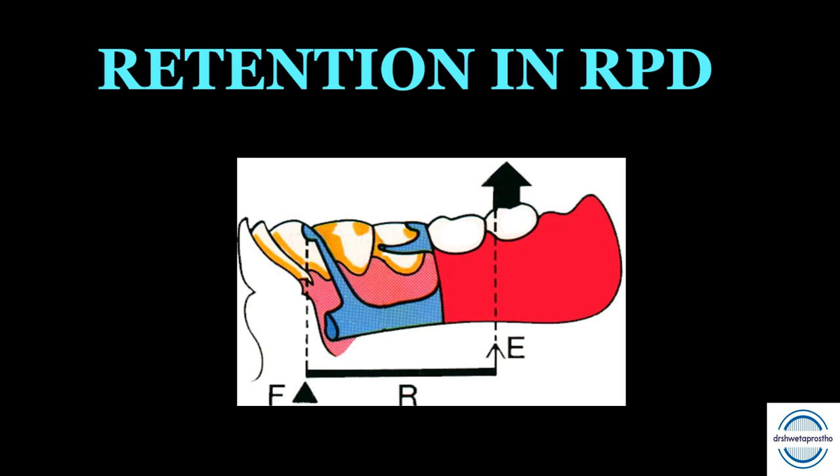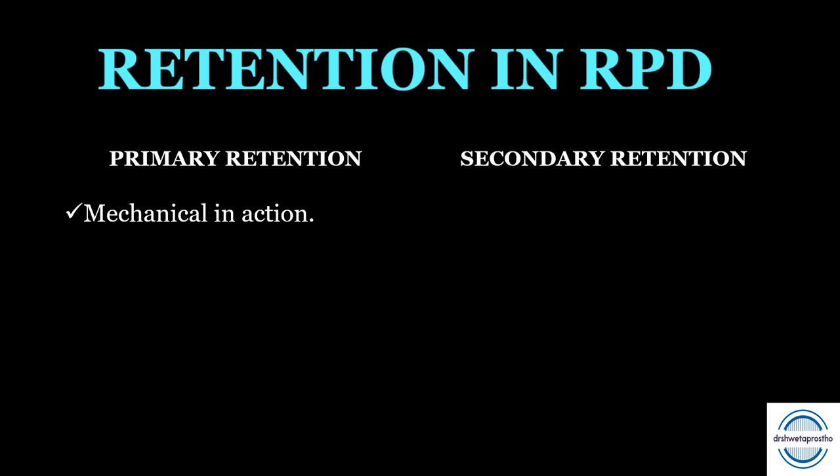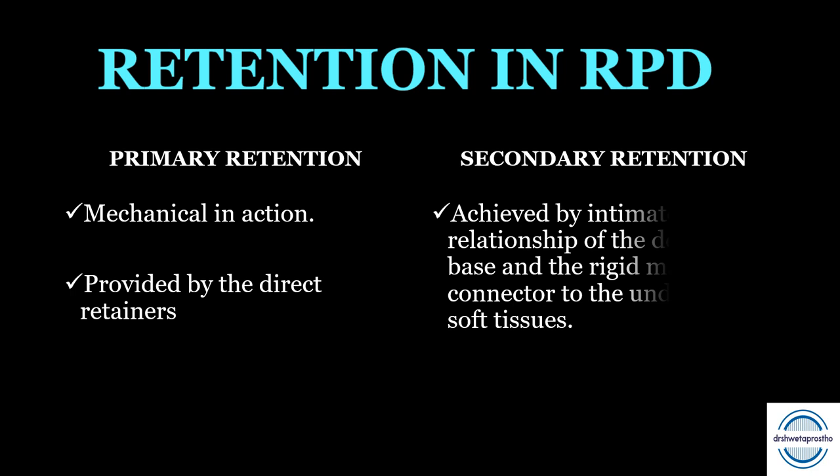Retention in removable partial denture: retention is the quality of the prosthesis to resist the forces acting to dislodge it away from the tissue structure. Retention in RPD can be primary or secondary. Primary retention is mechanical in action and is provided by the direct retainers, while secondary retention is achieved by the intimate relationship or contact of the denture base and rigid major connectors to the underlying soft tissues. Note that indirect retainers are not included in retention in RPD.